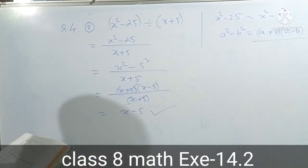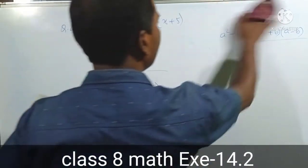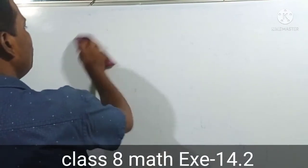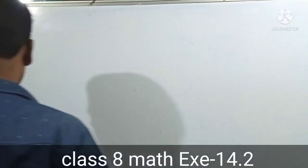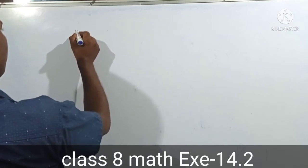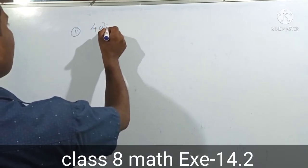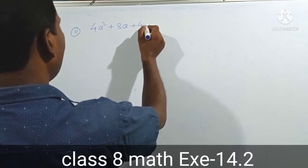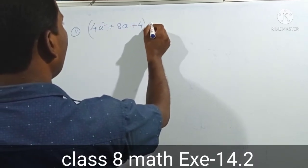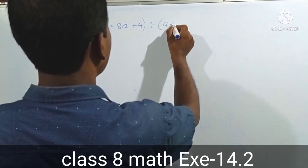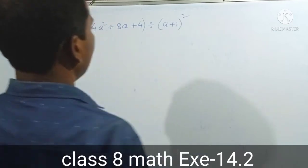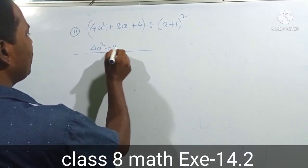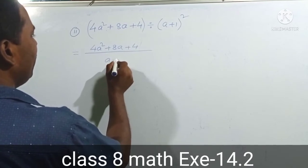Question number 2 of Exercise 14.2, Class 8 Mathematics. Question number 2: a squared plus 8a plus 4a squared, divided by a plus 1 whole square. We are looking at a squared plus 8a plus 4, divided by a plus 1 whole square.